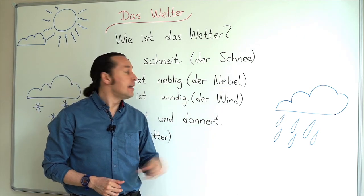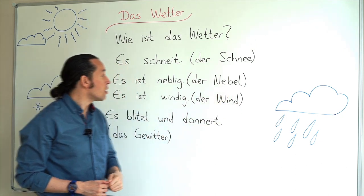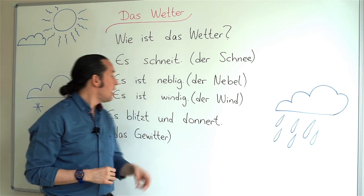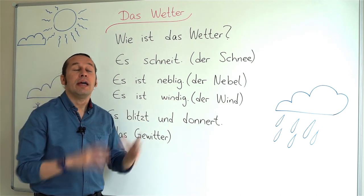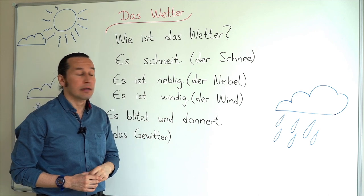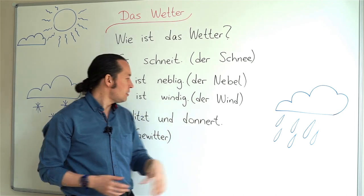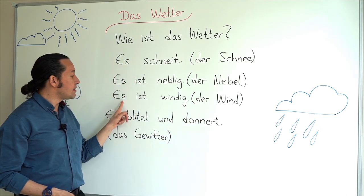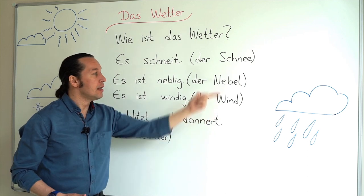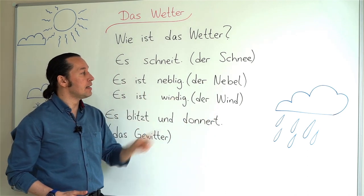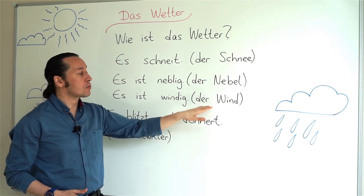Here we have 'Der Nebel' — fog. Fog is 'Der Nebel.' If I say it is foggy, I will say 'Es ist neblig.' And here we have 'Der Wind' — same as in English, wind. If I say it is windy, I will say 'Es ist windig.' So: fog is 'Der Nebel,' es ist neblig; wind is 'Der Wind,' es ist windig.